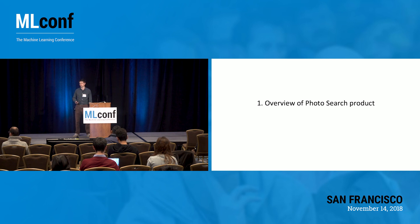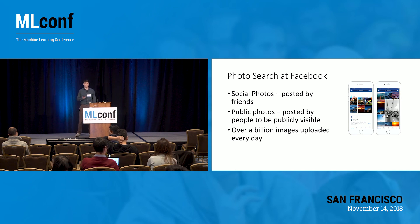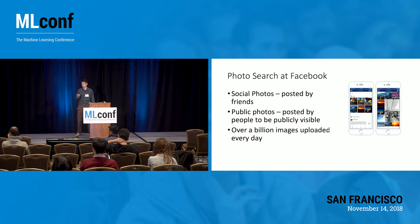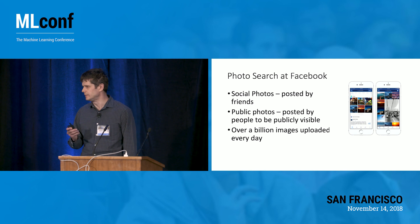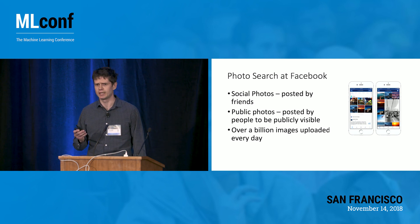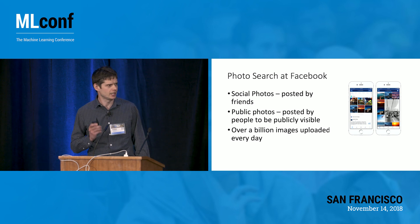Let's start with an overview of the photo search product. When it comes to Facebook, there are two types of photos available on the platform. One is social photos — photos of your friends. Another source of data is public photos, where people posted them with privacy visible to everyone on the Facebook platform. We have over a billion images uploaded every day, which makes us one of the largest image search engines in the world.